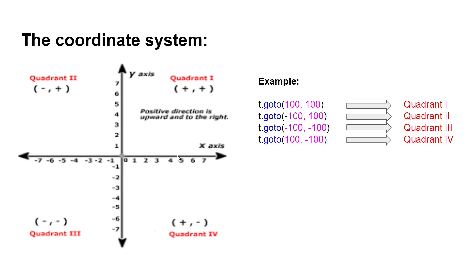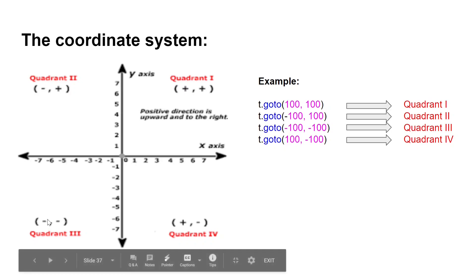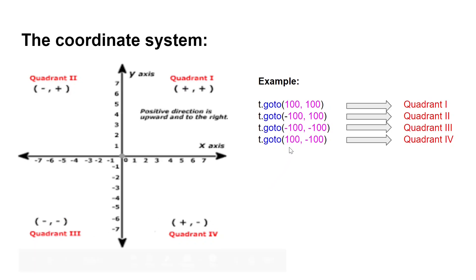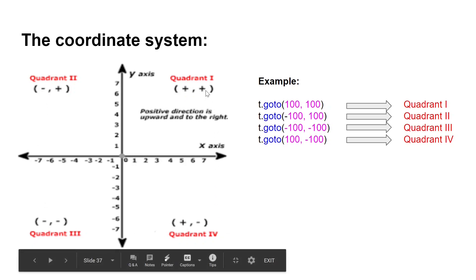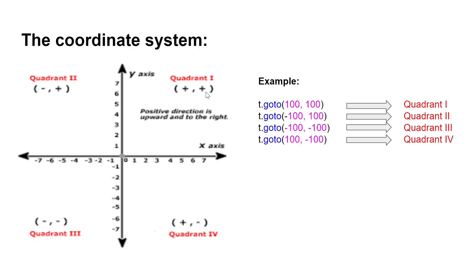The x-axis is the horizontal line and it always goes first when you say the coordinates. The y-axis is the vertical line and you say it second. For example, the first point is (100, 100), which is in the first quadrant. The second point is (-100, 100) in the second quadrant. The third point is (-100, -100) in the third quadrant. And the last point is (100, -100) in the fourth quadrant. If you join these four points together, it creates a large square. You can use the t.goto function if you want the position to be specific.